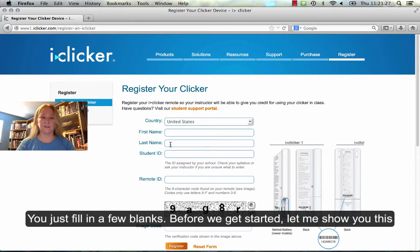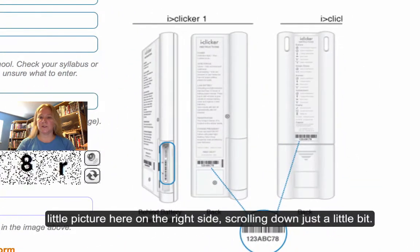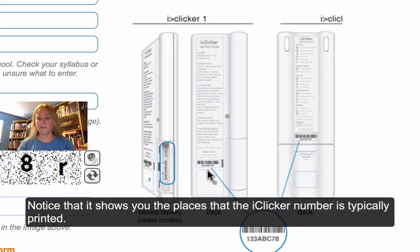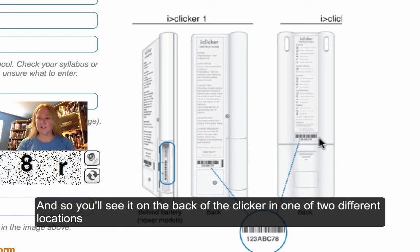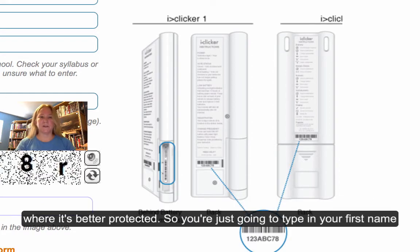It's pretty easy — we just fill in a few blanks. Before we get started, let me show you this little picture here on the right side. Scrolling down just a little bit, notice that it shows you the places that the iClicker number is typically printed. You'll see it on the back of the clicker in one of two different locations. Or again, if it's rubbed off, it may be underneath the battery compartment where it's better protected.